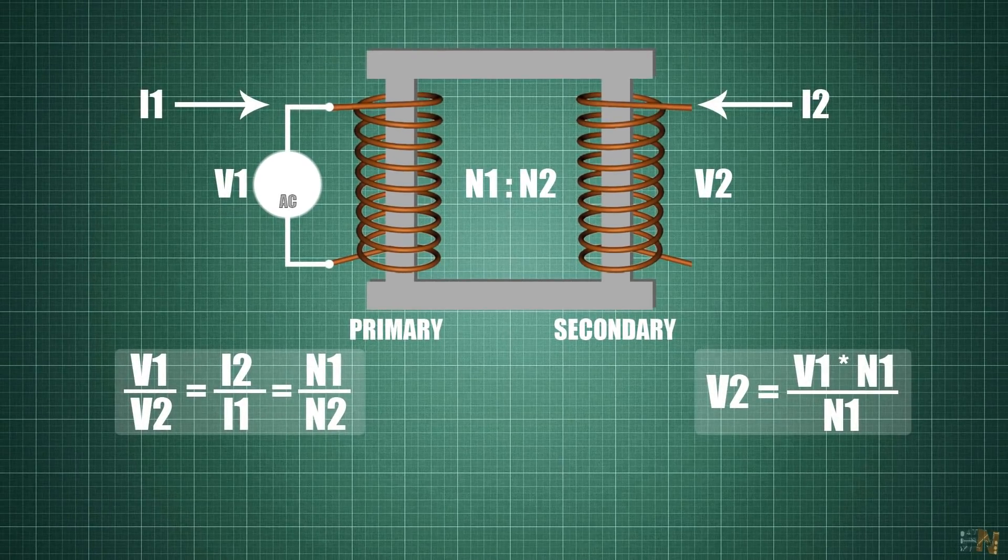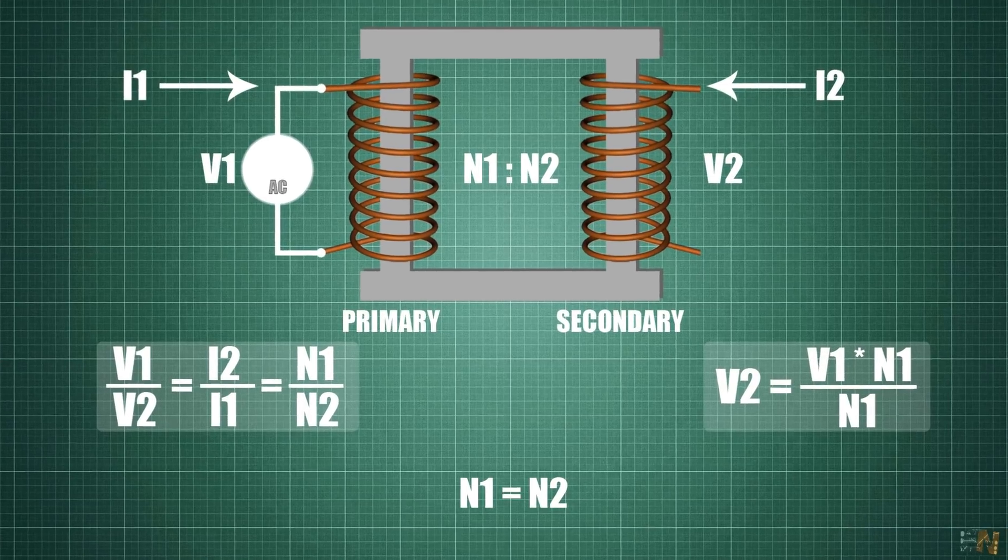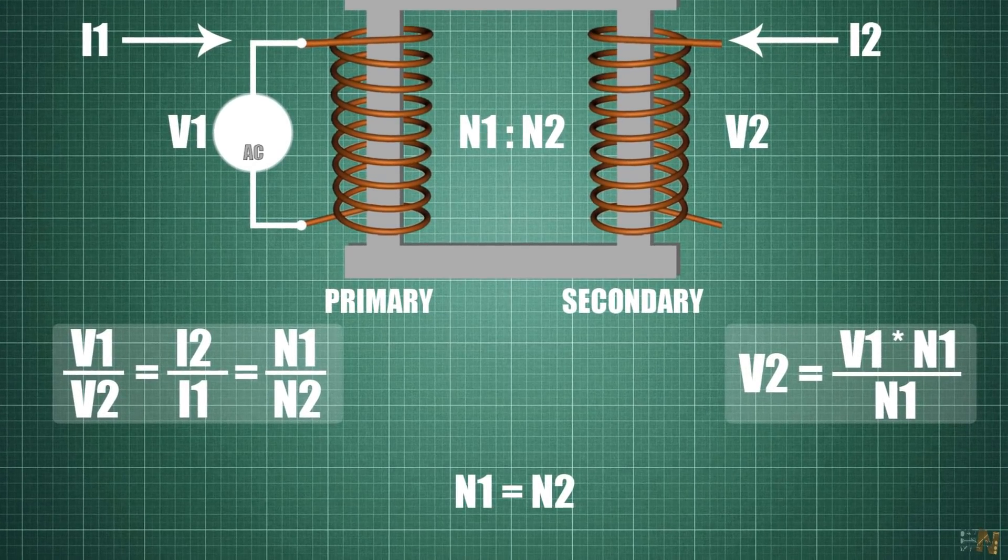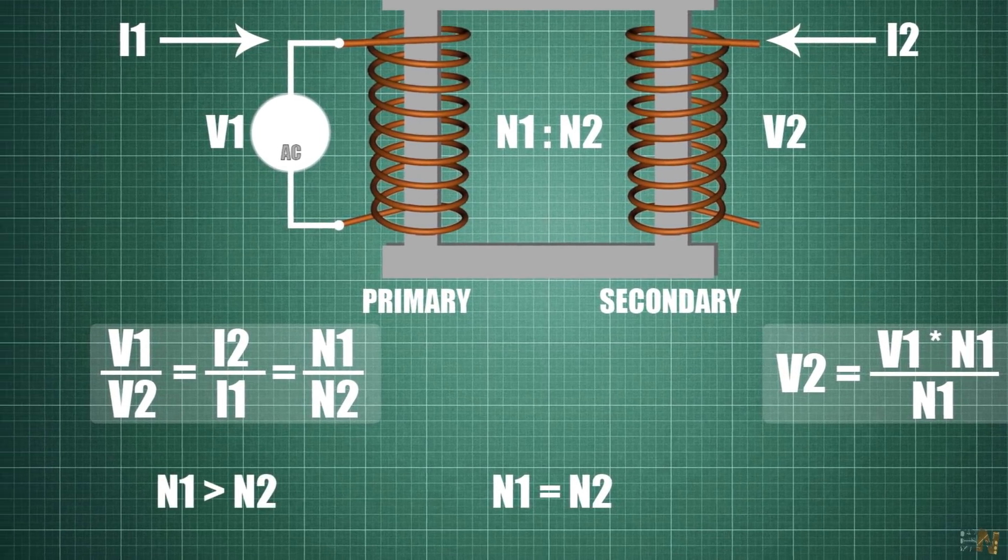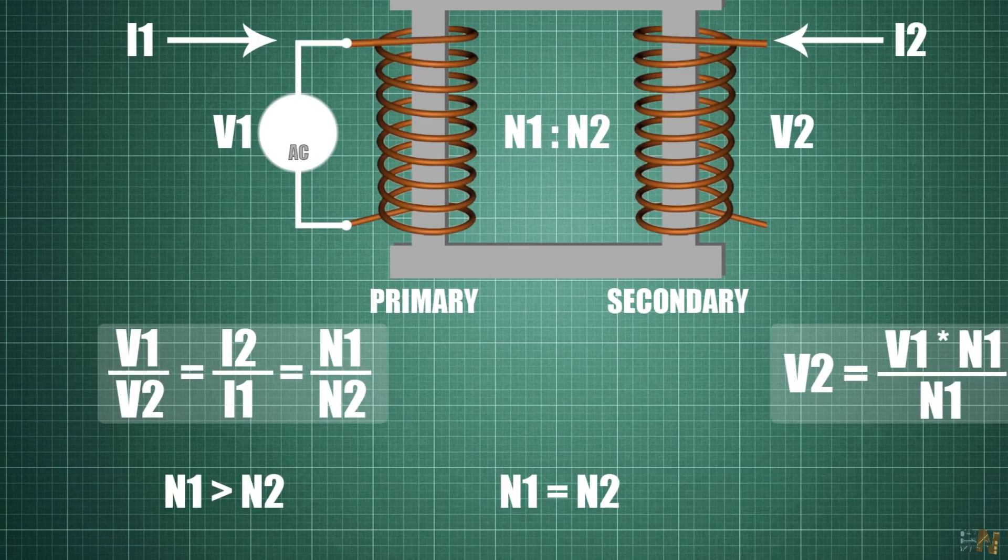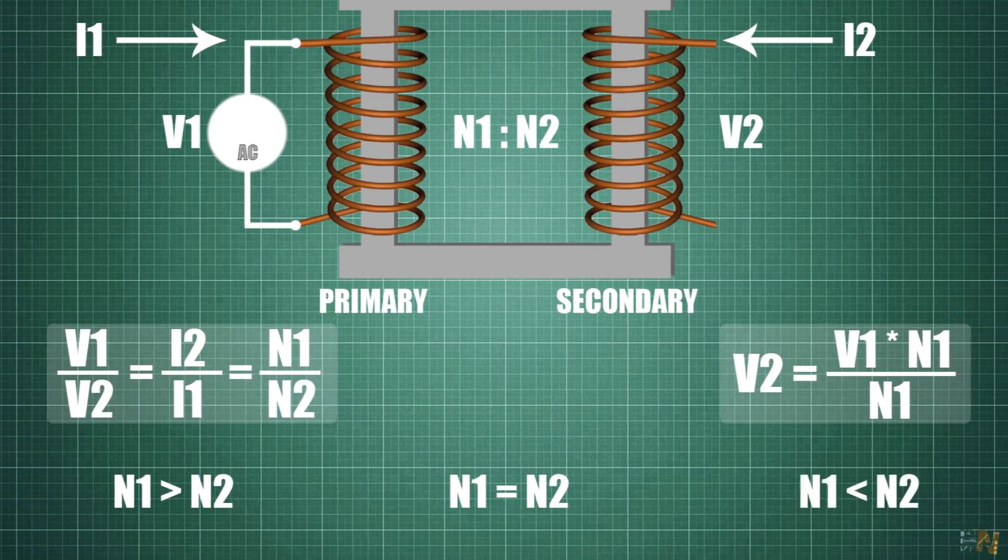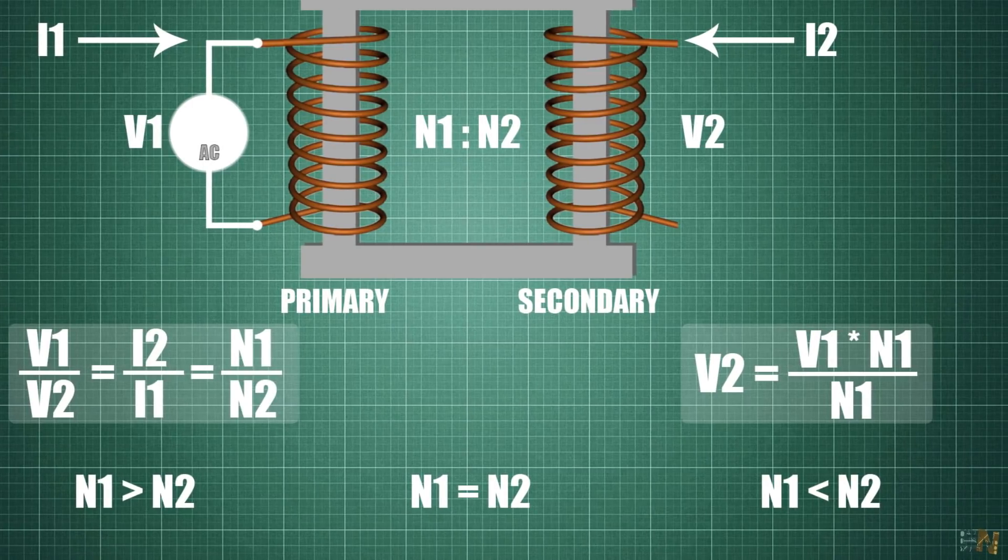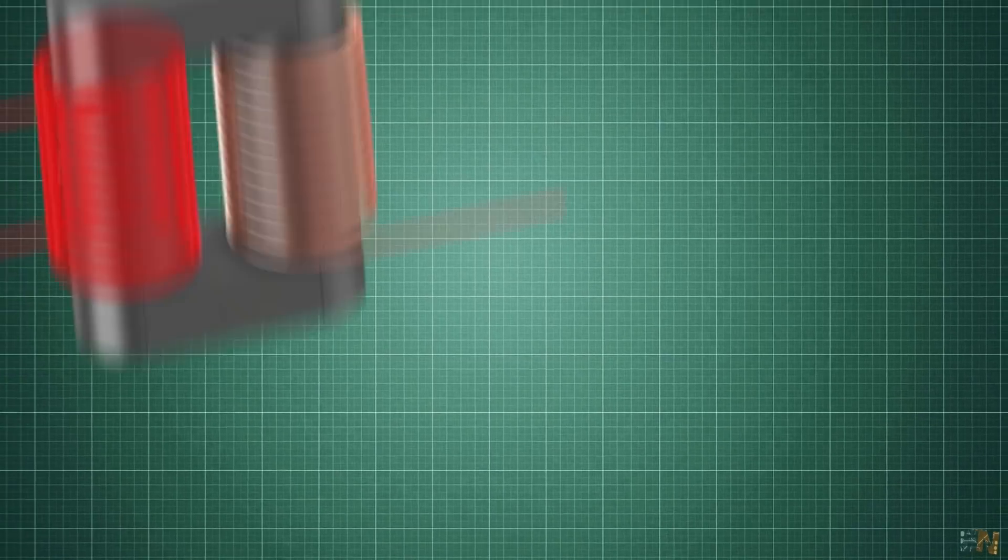If N1 is equal to N2, then we have the same voltage at the output. So this will be a 1 to 1 ratio. If N2 is higher than N1, the output voltage will be higher as well. And if N2 is lower, the output will be lower. Now we know the basic of a transformer. But there is more.